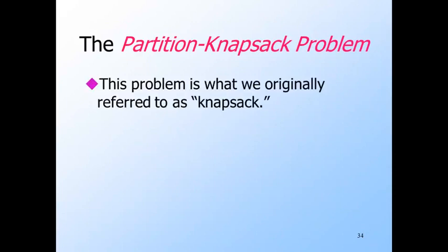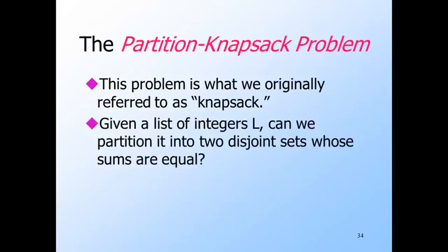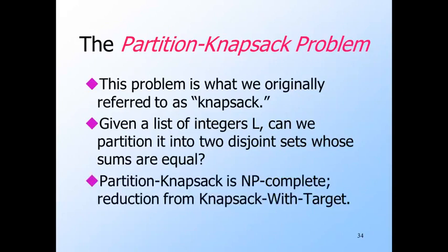We're now going to prove the original knapsack problem is NP-complete. We'll refer to it as partition knapsack — given a list of integers, can we partition them into two disjoint sets with equal sums? We'll show partition knapsack to be NP-complete by reducing knapsack with target to it. We already saw that partition knapsack is in NP — just guess the partition and sum the two sets.